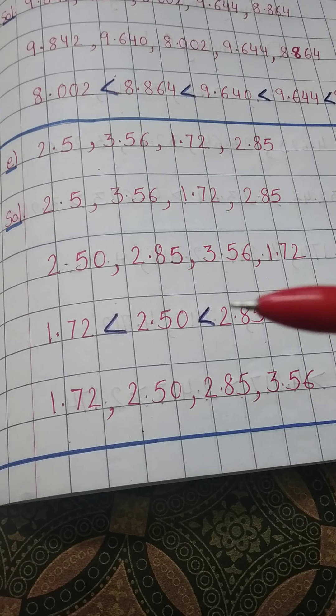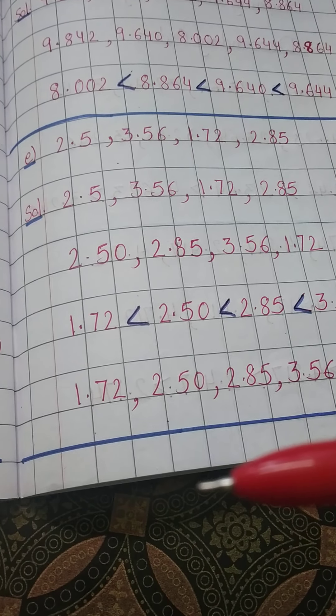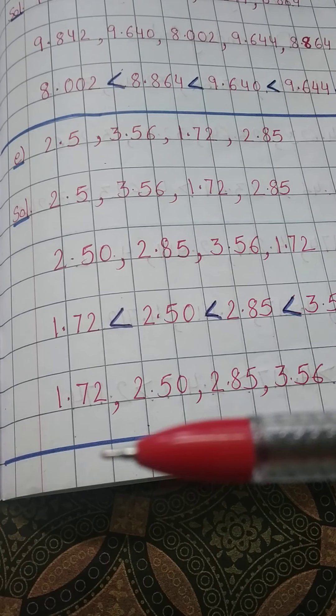So we have to read the numbers and compare in our mind. If they are unlike decimal numbers, we have to make them like decimals, then we will compare.